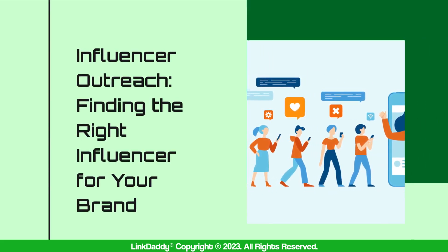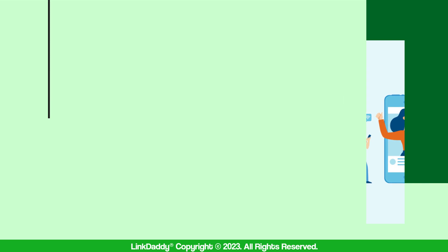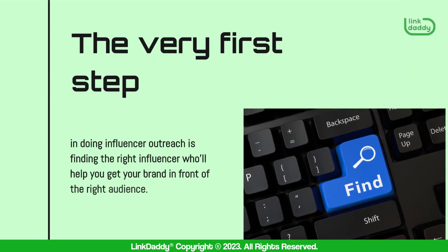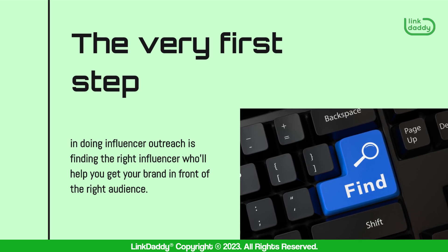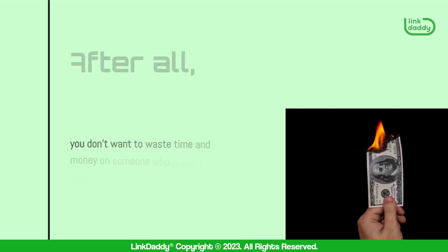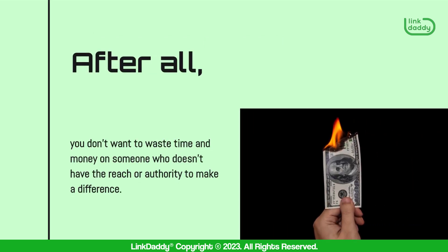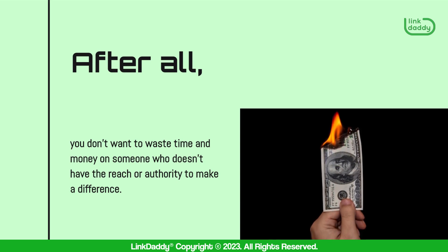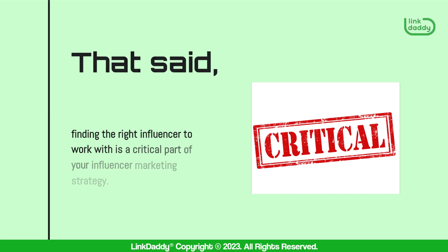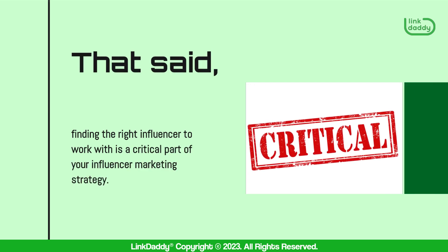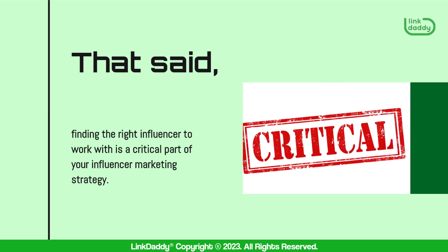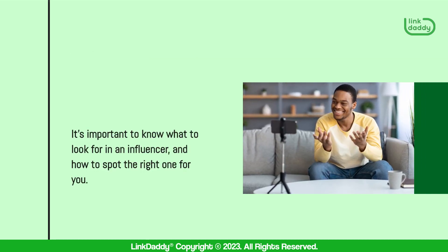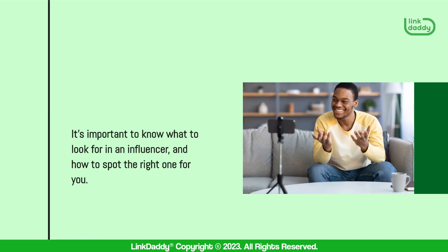The very first step in doing influencer outreach is finding the right influencer who'll help you get your brand in front of the right audience. After all, you don't want to waste time and money on someone who doesn't have the reach or authority to make a difference. Finding the right influencer to work with is a critical part of your influencer marketing strategy, and it's important to know what to look for and how to spot the right one for you.